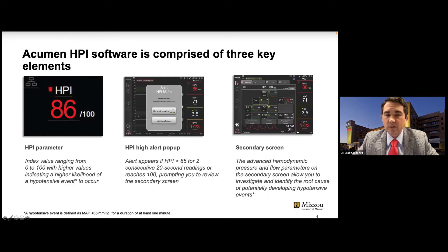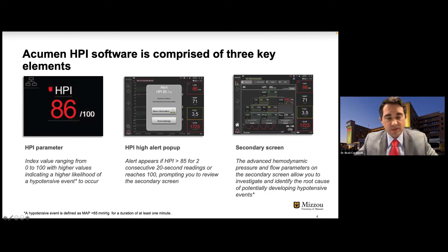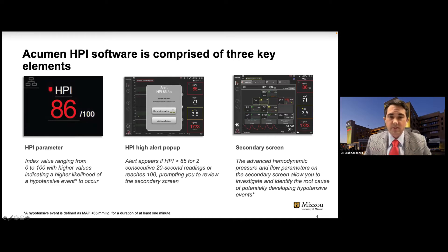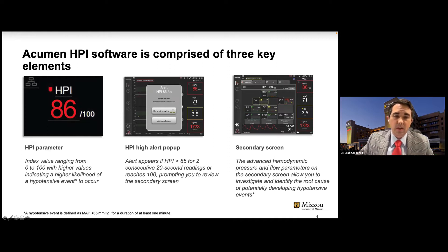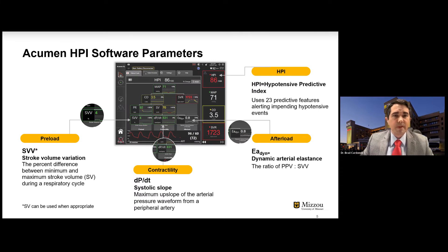You can also get an HPI high pop-up alert showing that you're likely to become hypotensive when the number reaches greater than 85 for two consecutive readings. This is very real-time — each reading occurs in 20-second intervals. These parameters give you real-time information and feedback to treat the individual patient in the OR or ICU. We get a secondary screen that gives us information about why the patient is truly hypotensive or whether we're compromising flow, which is very important.